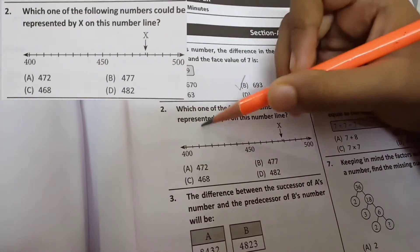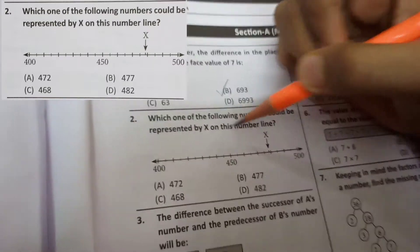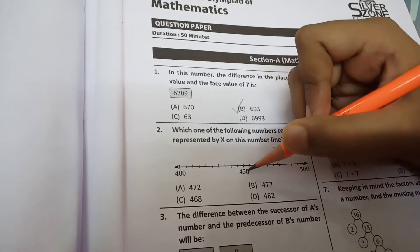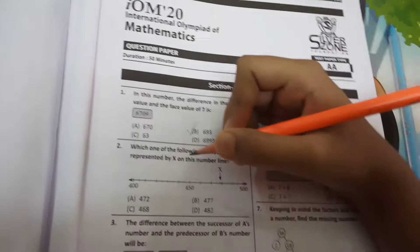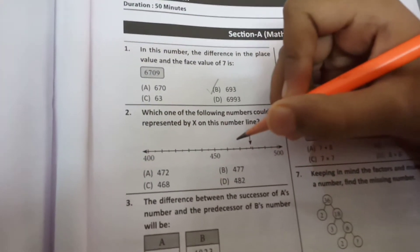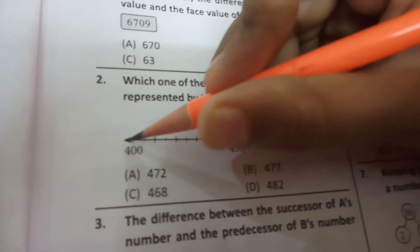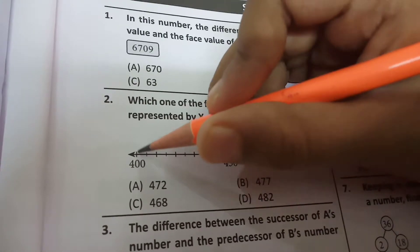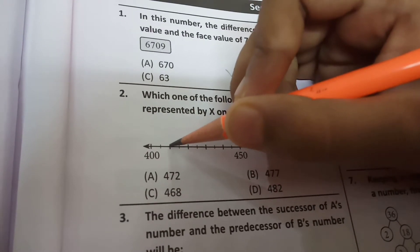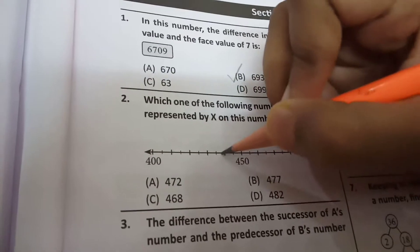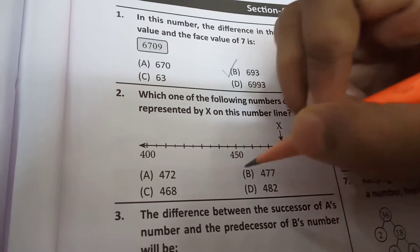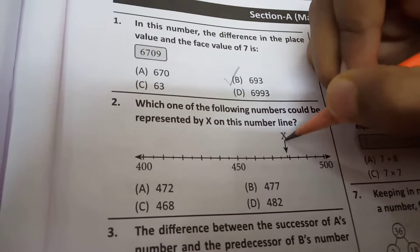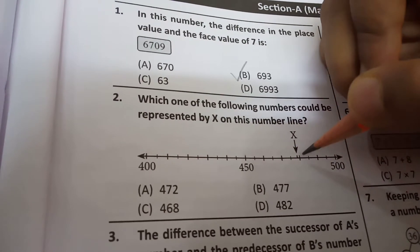Next question. Which one of the following numbers could be represented by x on the number line? So look here. Here it is 450 in the very between. In between of every two of these big lines, it is represented 10. So 10, 20, 30, 40, 50. We came to 450. Now 460, 470, 480. So x is somewhere between 470 and 480.